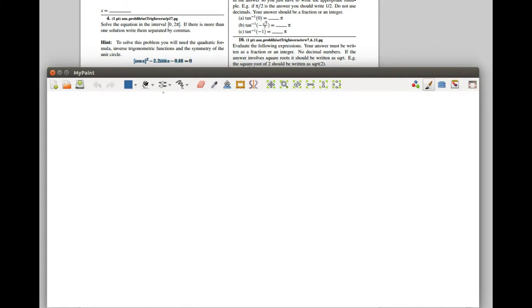Cosine of x squared minus 2.2 cosine of x minus 0.48 is equal to 0. If you let u be equal to the cosine of x, just think of that for a minute, then that equation looks like u squared minus 2.2u minus 0.48 is equal to 0.